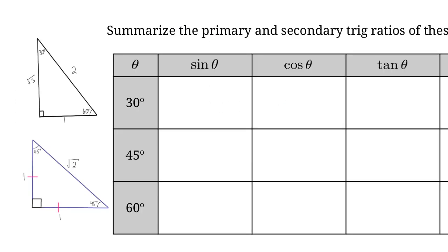Let's set up our trig ratios for these special angles. We know the sine of 30 degrees is 1 over 2 and the cosine of 30 degrees is the square root of 3 over 2. So what's the tan of 30 degrees? We know that tan is equal to opposite over adjacent, so this is just going to be 1 over root 3.